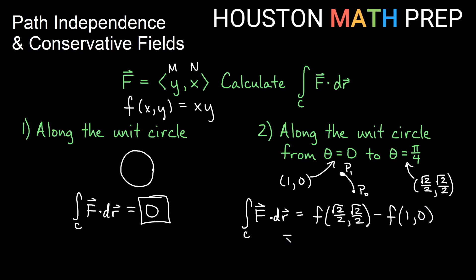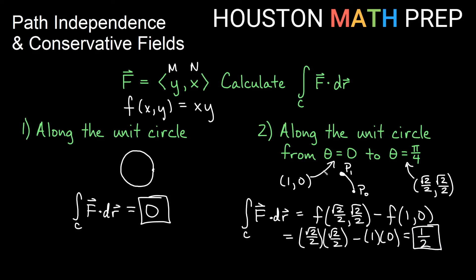So the line integral of F·dr equals the potential function evaluated at the endpoint (√2/2, √2/2) minus the potential function evaluated at the starting point (1, 0). Plugging into xy: (√2/2)(√2/2) minus (1)(0). That gives one half minus zero, which is one half. We used path independence and the fundamental theorem of line integrals to get the answer — no actual line integral computation needed.